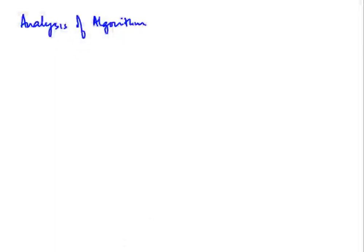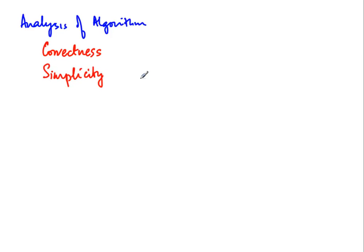Let's talk about the analysis of algorithms. The analysis of algorithms measures various parameters about how an algorithm works. One parameter which we cannot sacrifice is correctness — we assume that any algorithm we design will always compute the expected answer. Another desirable property might be simplicity, but this is hard to quantify. What analysis of algorithms typically focuses on is something that can be quantified: efficiency — how much the algorithm consumes by way of resources.